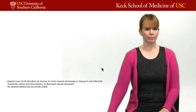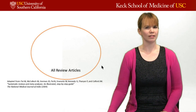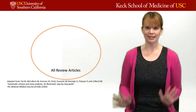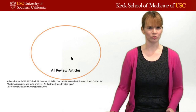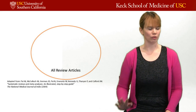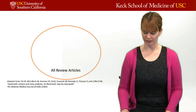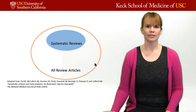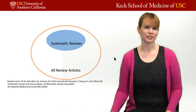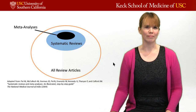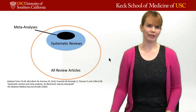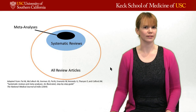I want to clarify the difference between meta-analysis and systematic review — a lot of people use them like they're the same thing, but they're not. Think of it this way: the large circle is all review articles, including standard literature reviews and systematic reviews. Within that is a circle of all systematic reviews. And within those systematic reviews, some of them have a meta-analysis. So you can have a systematic review with or without a meta-analysis.